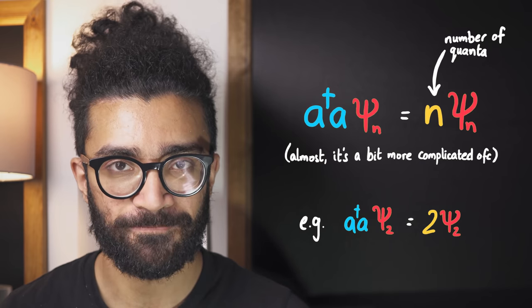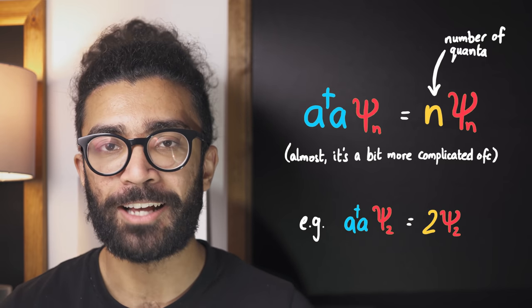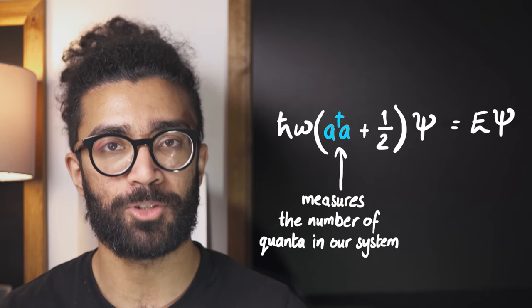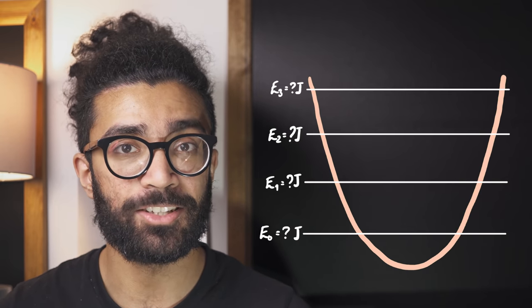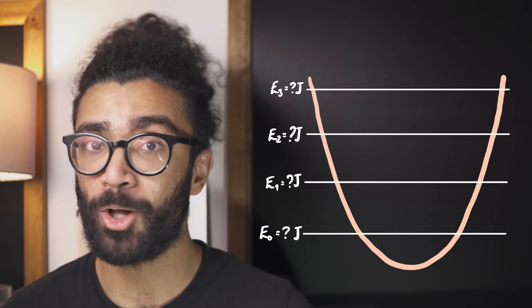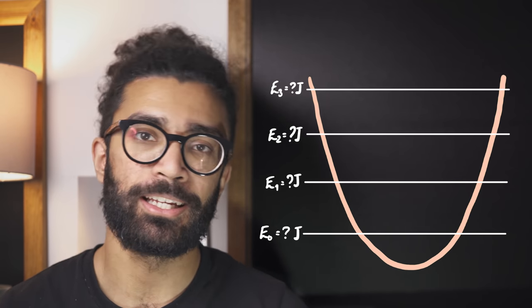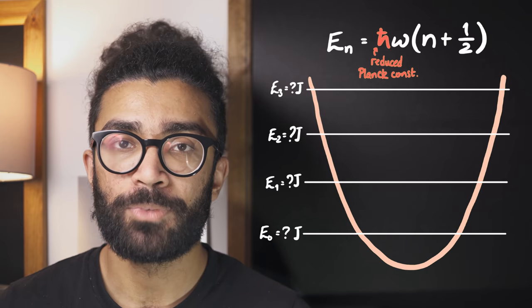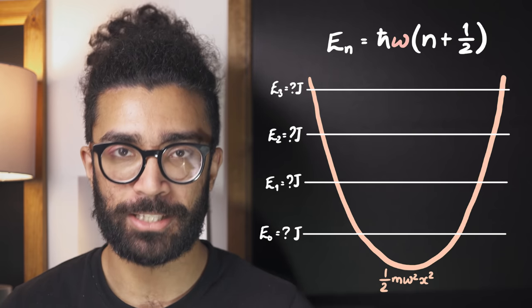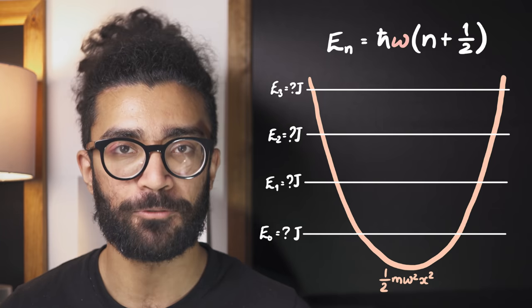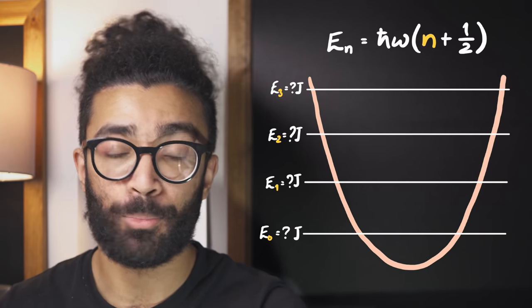Now all of this — the ability to find the number of quanta required to get to a particular energy level, as well as being able to write the Schrödinger equation in terms of the creation and annihilation operators — will allow us, with a bit of simplified mathematics, to actually find the energy value of each energy level without having to solve the Schrödinger equation in any detail. As it turns out, the actual energy value for each energy level ends up being this quantity here. H-bar is a constant in quantum mechanics known as the reduced Planck constant. Omega is a property of the potential well itself, so different sized and shaped potential wells will have different omega values.